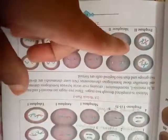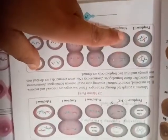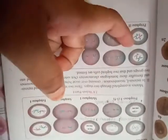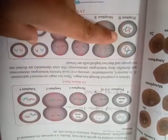Hence in mitosis the two daughter cells are identical to the parent cell. But in this meiosis the daughter cells are not identical to the parent cell.